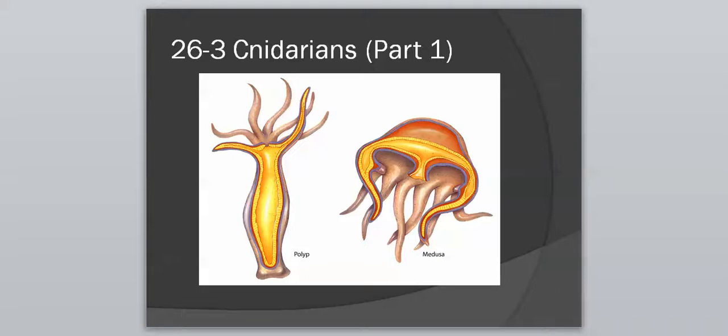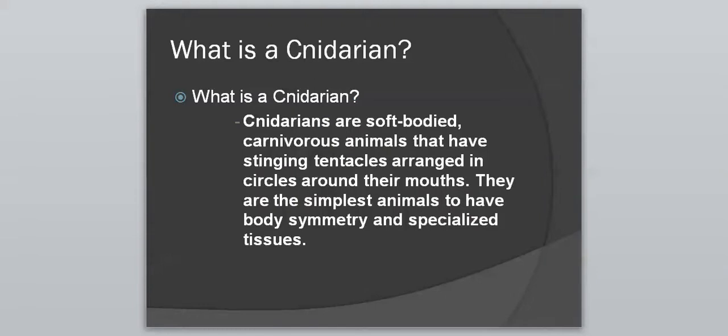The 'c' is silent, so Cnidarians. The first question is: what in fact is a Cnidarian? Our definition is that they are soft-bodied, carnivorous animals that have stinging tentacles arranged in circles around their mouths, and they're the simplest animals to have body symmetry and specialized tissues. The stinging tentacles are going to be their main defining characteristic.